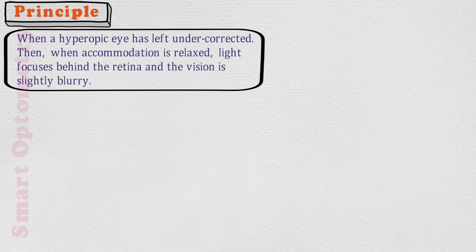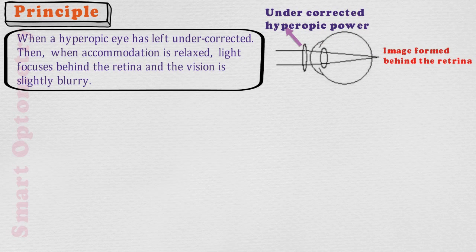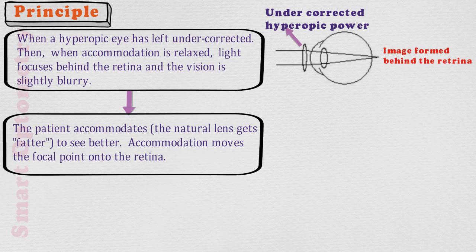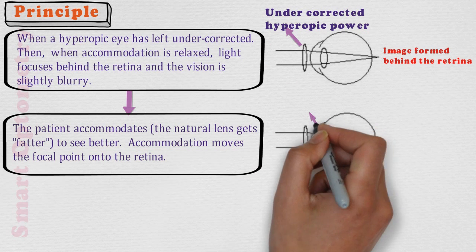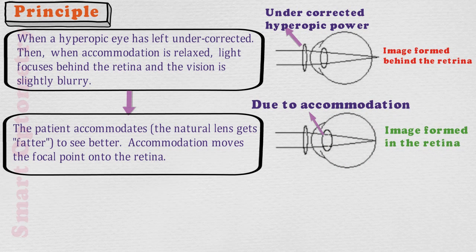Let's start with the principle. When a hyperopic eye is left undercorrected, and accommodation is relaxed, light focuses behind the retina and the vision is slightly blurry. Here in this figure, this is undercorrected hyperopic power, due to which the image is formed behind the retina. The patient accommodates to see better, and accommodation moves the focal point onto the retina. Here in this figure, due to accommodation, the image is formed on the retina.